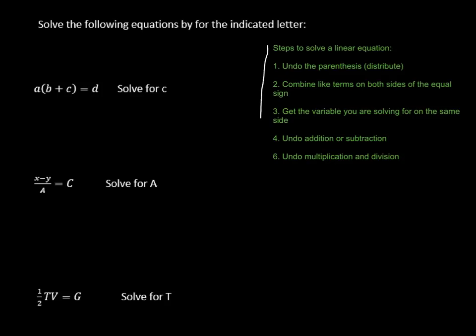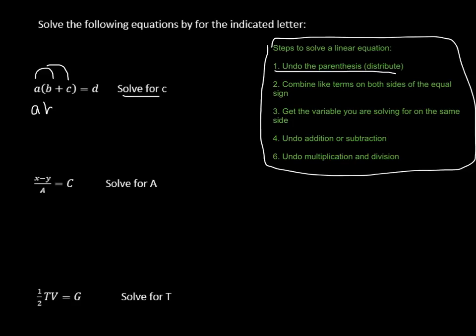Now, what I want to stress is we're still going to use these steps that we normally follow to solve a linear equation. So I'm going to follow those. The first step says to undo the parentheses to distribute. We're solving for c, so we want to get that c by itself. The first thing we're going to do is distribute, and we're going to get ab plus ac equals d.